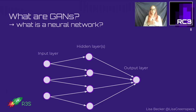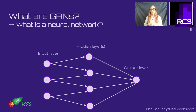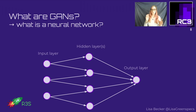Deep learning involves, for example, hidden layers in the neural network, and is a part of machine learning, which is a part of artificial intelligence - mimicking the human brain's intelligence. A neural network typically consists of three main parts: the input layer, one or more hidden layers, and the output layer.